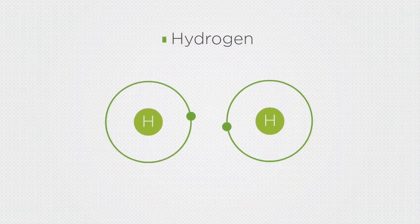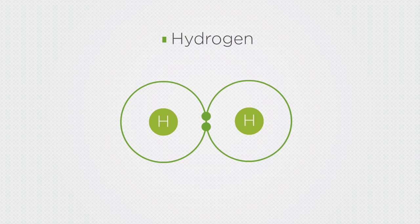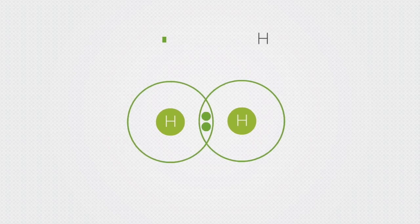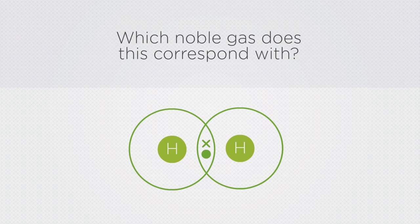When two hydrogen atoms bond the shells overlap and because each atom only has one electron to share there are two electrons being shared over two shells. These are represented by a dot and a cross. Which noble gas does this correspond with?